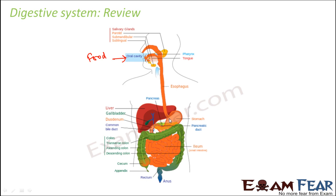Then the food passes down to the esophagus and reaches the stomach. In the stomach, the gastric glands secrete gastric juice which contains enzymes as well as hydrochloric acid, which makes the medium inside the stomach acidic and activates the enzymes. The enzymes help in the digestion of proteins and fats, so proteins and fats get partially digested here.